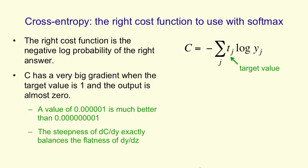And that exactly balances the fact that the way in which the output changes as you change the input, dy by dz, is very flat when the answer's very wrong. And when you multiply the two together to get the derivative of the cross entropy with respect to the logit going into output unit i, you use the chain rule. So that derivative is how fast the cost function changes as you change the output of a unit times how fast the output of the unit changes as you change zi.